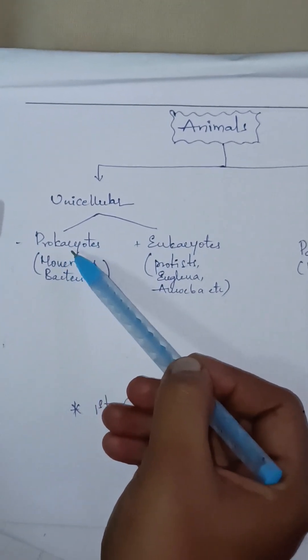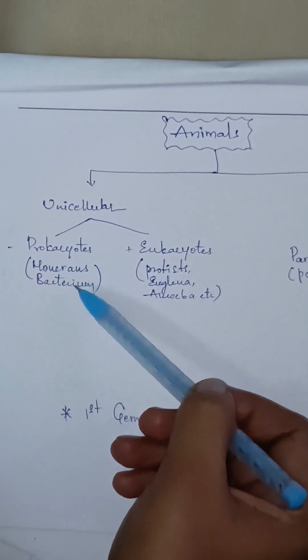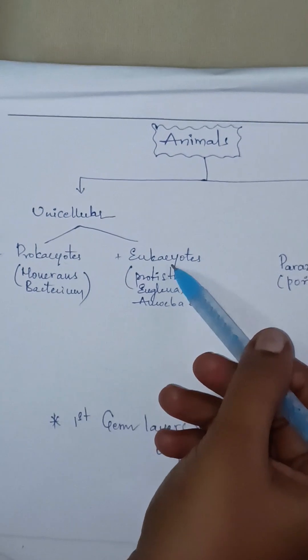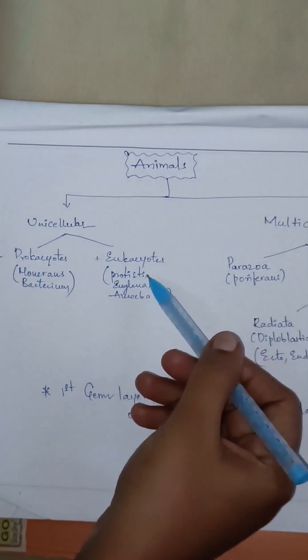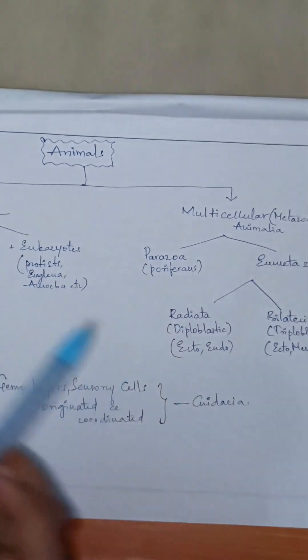Prokaryotes do not have a nucleus and include monerans, such as bacteria. Eukaryotes are true cells with a nucleus and membrane-bound organelles. They include protists like amoeba.